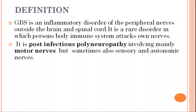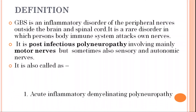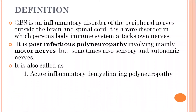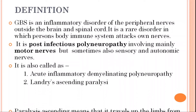GBS sometimes occurs due to GI infection as well as respiratory tract infection. That's why it is also known as post-infectious polyneuropathy. There are other two names of GBS: it is also called acute inflammatory demyelinating polyneuropathy, that is AIDP, and second is Landry's ascending paralysis.